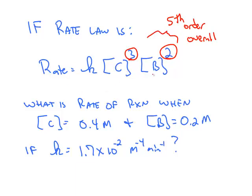If we know the molarities of C and B, and we know the rate constant k, we can solve for the rate at this point.